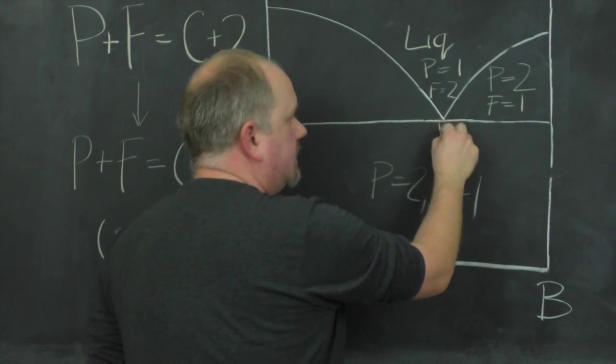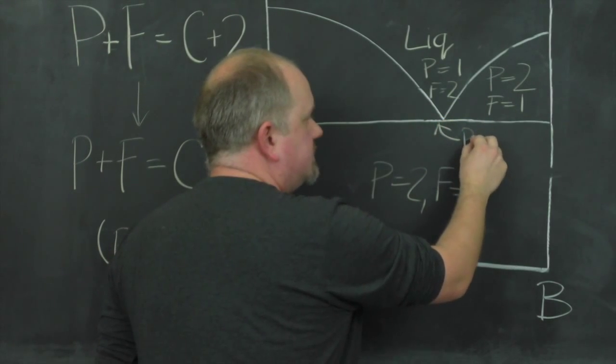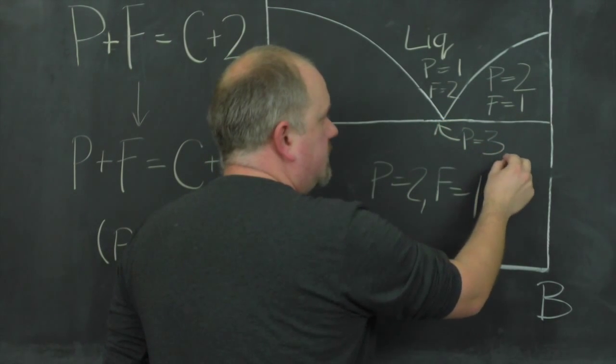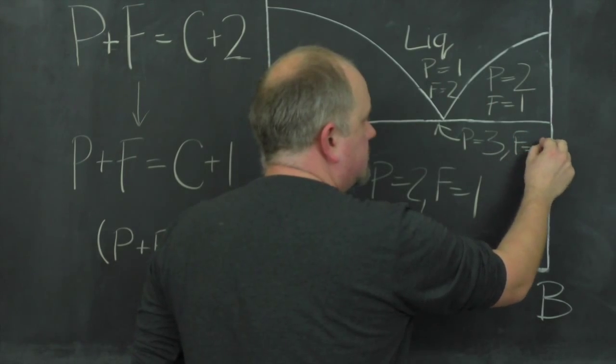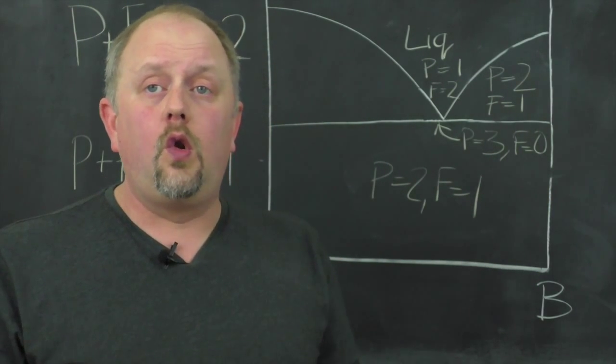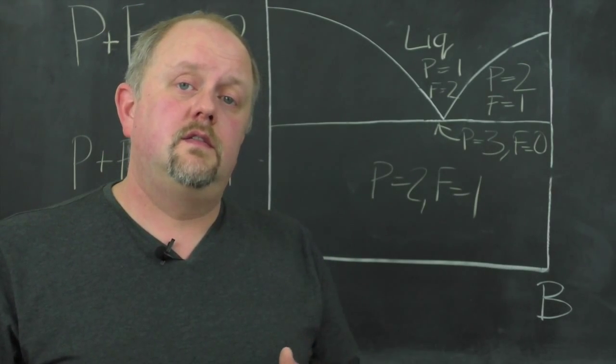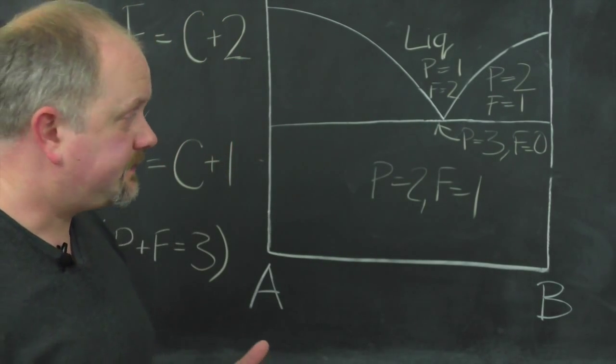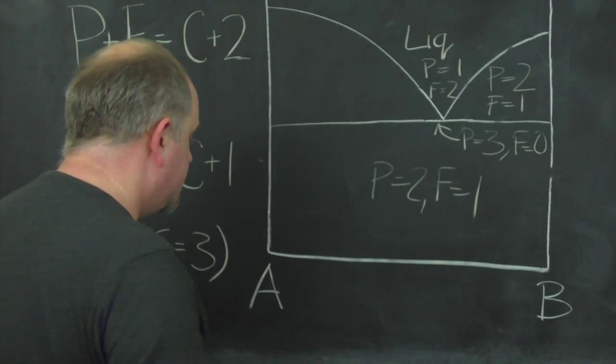Anywhere along the eutectic line we have three phases. So P equals 3, which means we have no degrees of freedom. So that means we have to fix all of the variables to define the system at any given point. Okay. So let's move on.